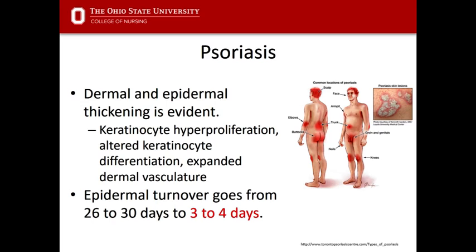There can also be some changes to the vasculature in affected areas. Common locations for psoriasis include the scalp, elbows, and knees, but also the armpit, groin, fingernails, trunk, and certain areas of the face. Some forms of psoriasis spread lesions throughout the body rather than focusing on certain areas. The increased epidermal turnover means keratinocytes grow very fast without time to differentiate, leading to the development of plaques.